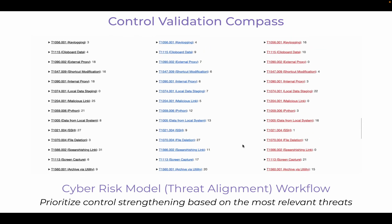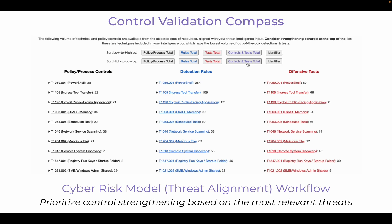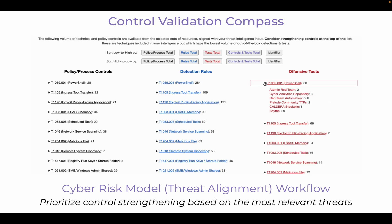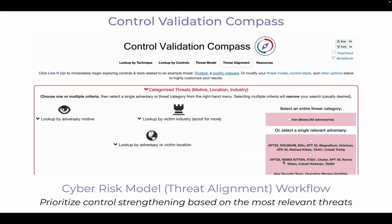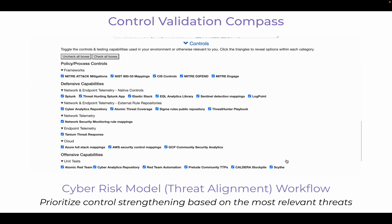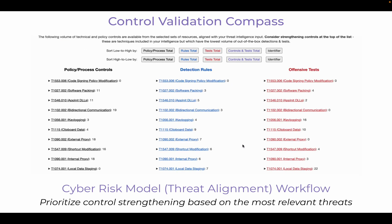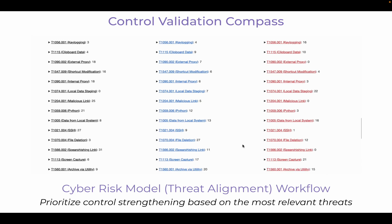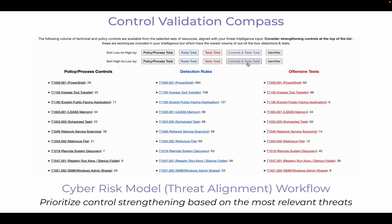Control Validation Compass allows any security team member to easily generate and visualize their unique list of techniques to prioritize, bringing a formerly advanced workflow into the hands of many and enabling more teams to start taking action on their intelligence-informed threat models. By making the process so fast, the tool also gives teams critical time back to begin operationalizing new security controls, tuning or strengthening existing ones, and completing the feedback loop by validating they work as expected against the actual adversary techniques the organization is most likely to face.